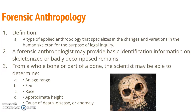A forensic anthropologist may provide basic identification information on skeletonized or badly decomposed remains. A couple years ago, there were some skeletal remains found inside a drainage ditch near the I-17 downtown. Those were sent to a forensic anthropologist to evaluate what gender they were, what their age range was, if they could estimate a race, about how tall they were, and if they had any death, disease, or anomaly.